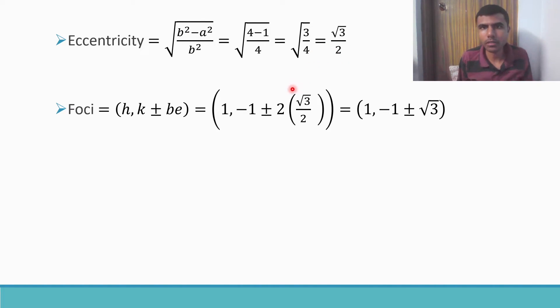Now they also asked to find out the coordinates of foci. Foci formula is (h, k ± be). h I showed you in the previous slide, h is 1 and k is -1. b is 2 and e is eccentricity, here it's √3/2. So this 2 would cancel and I am left with (1, -1 ± √3). So coordinates of foci are also done.